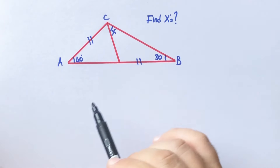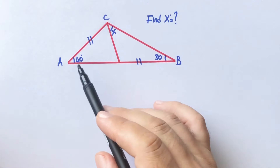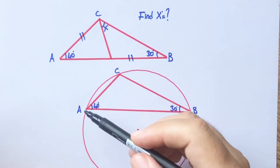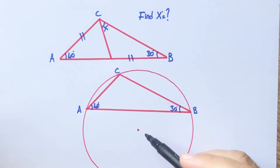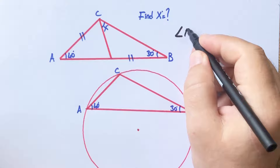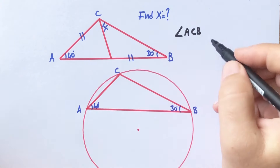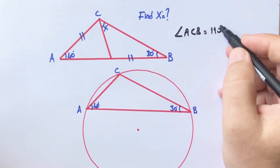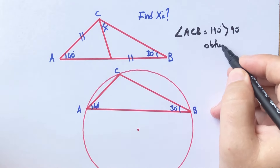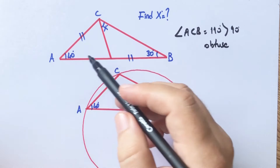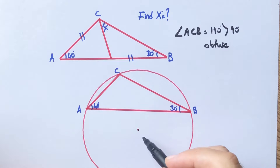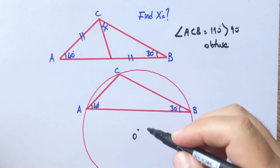If we draw the circumcircle of this triangle, angle ACB is 110 degrees, which means angle ACB is an obtuse angle. So the center of the circumcircle must be outside of this triangle. Because ACB is obtuse, the center must be here — let's call this point O.